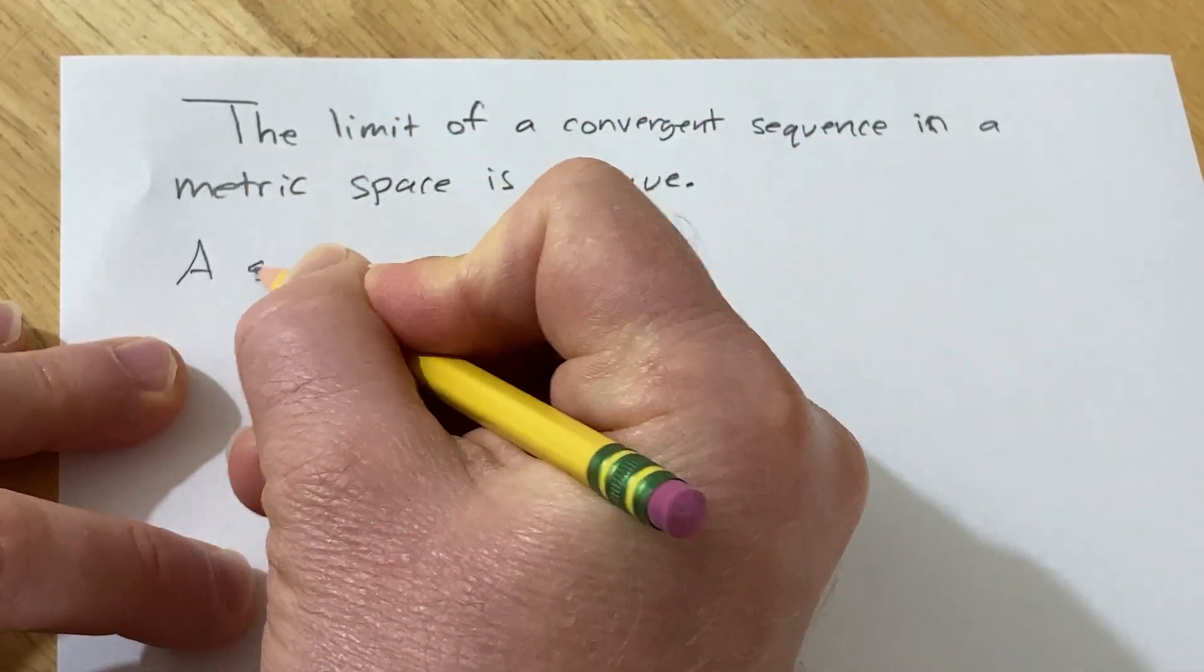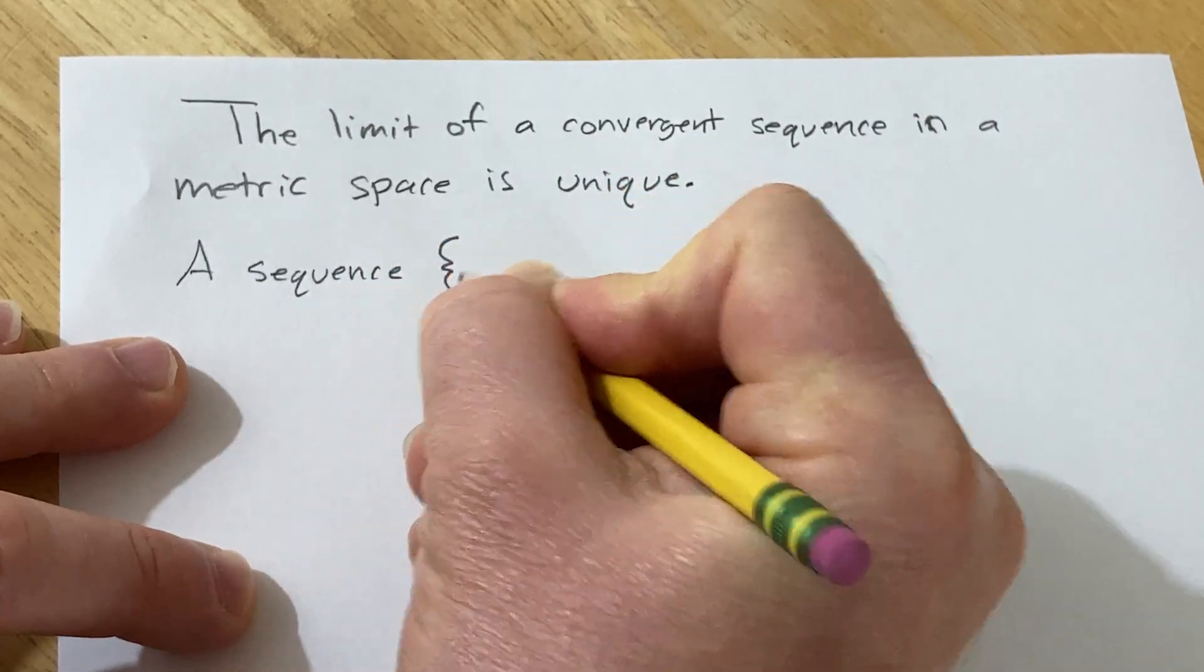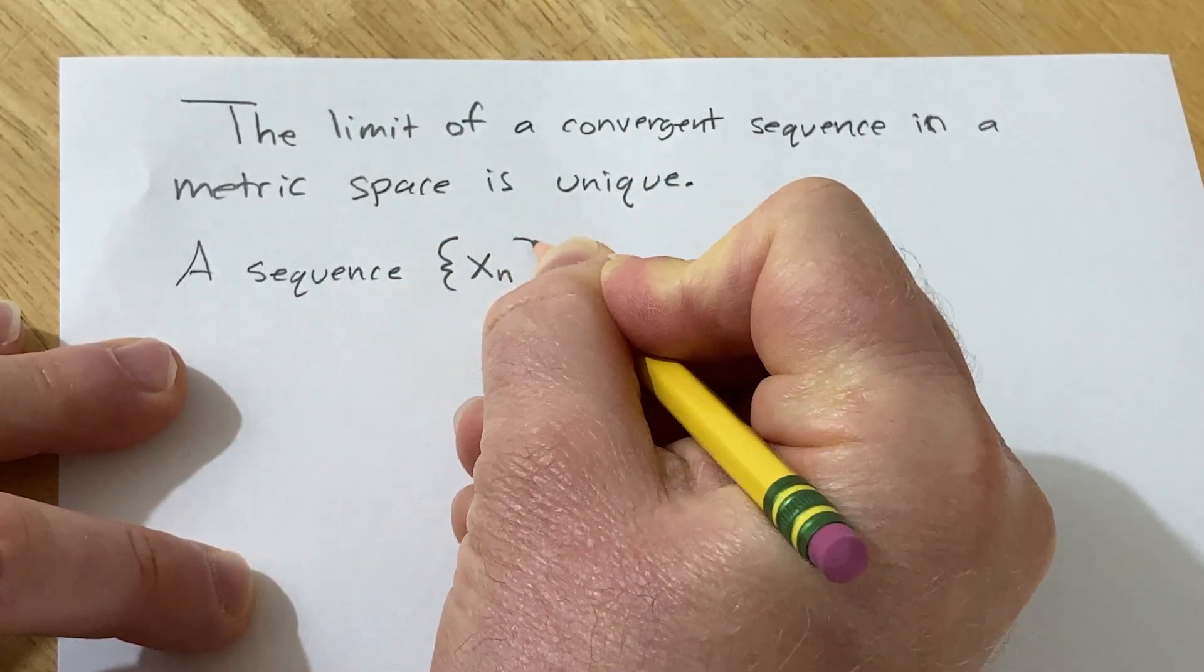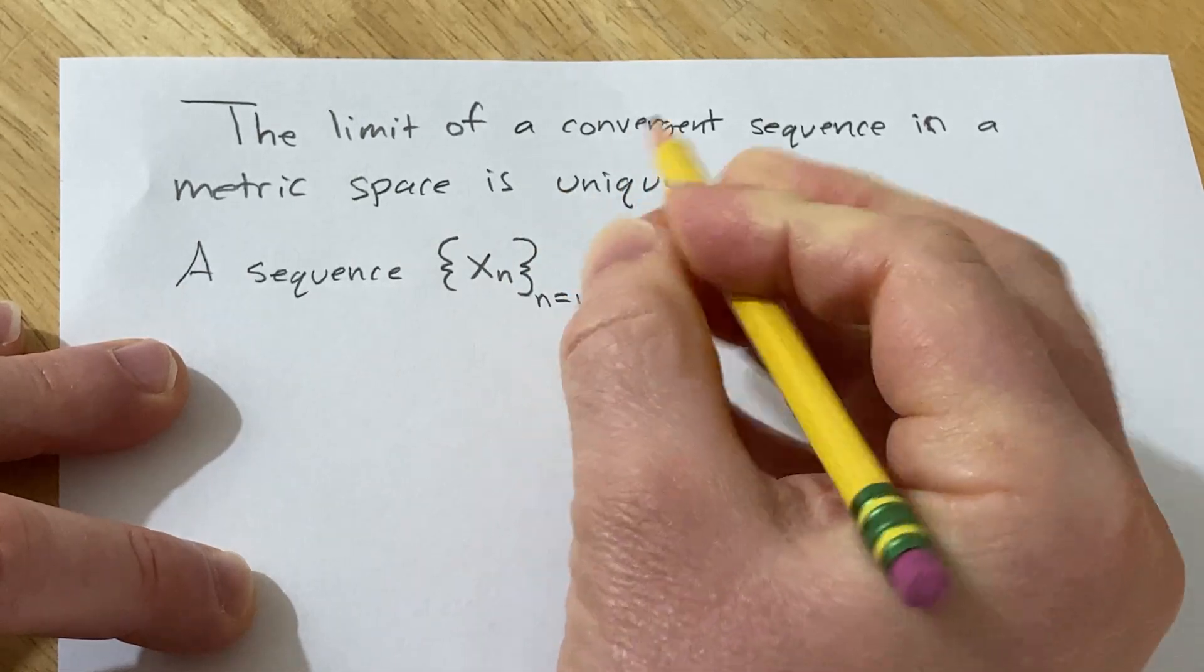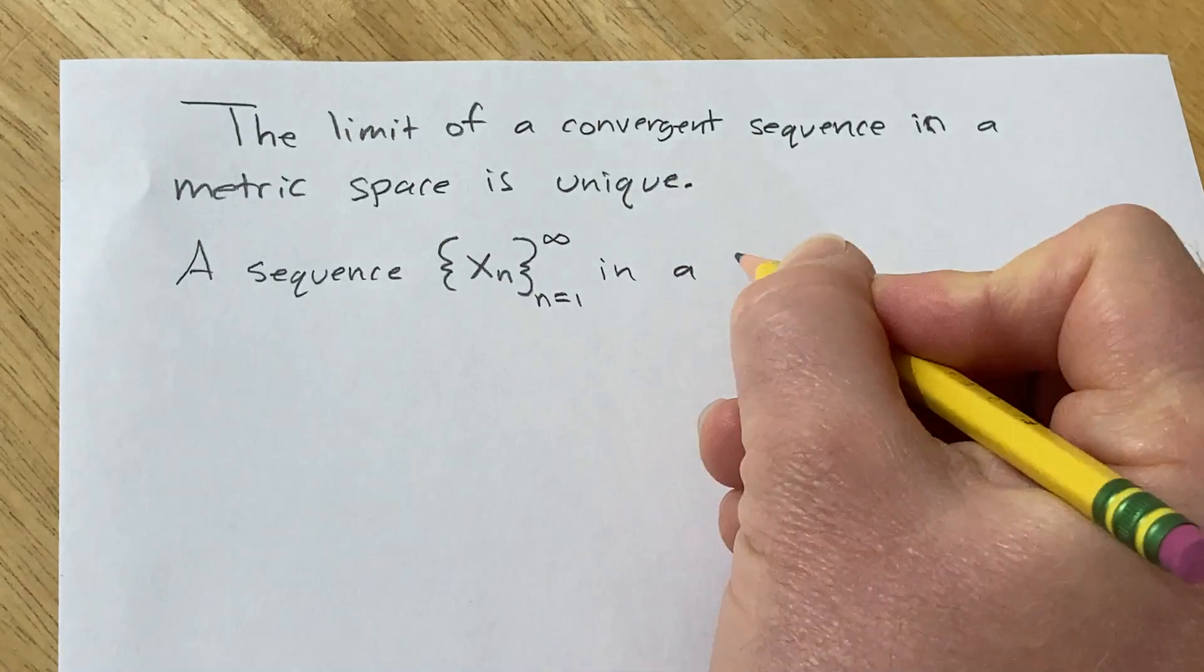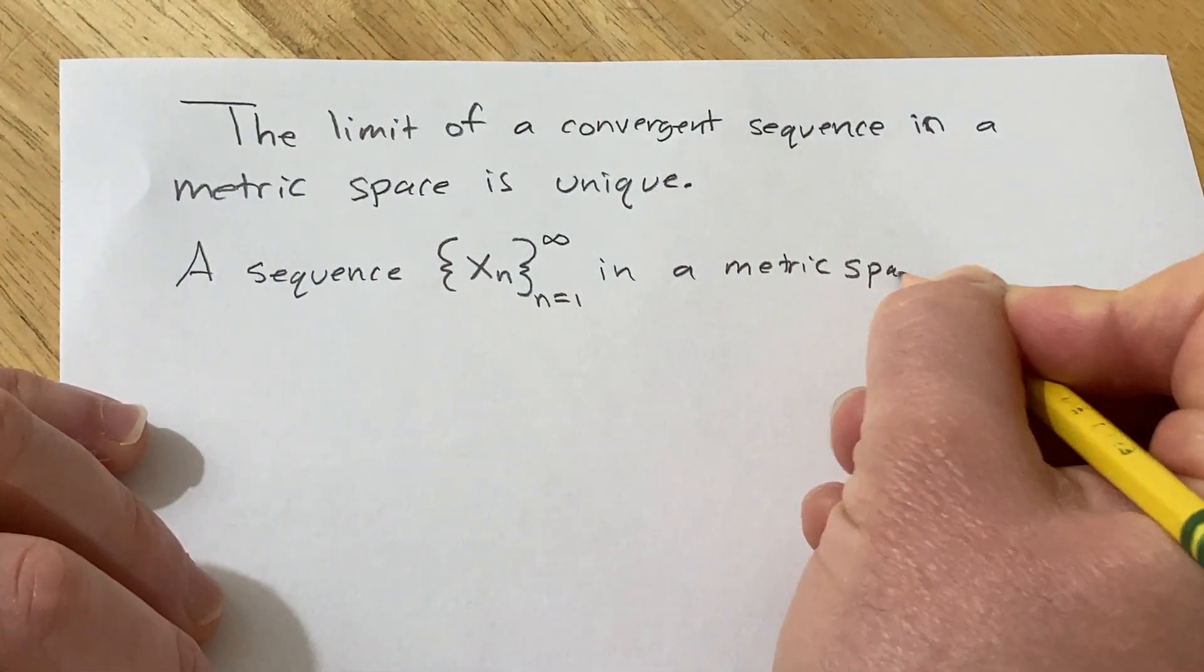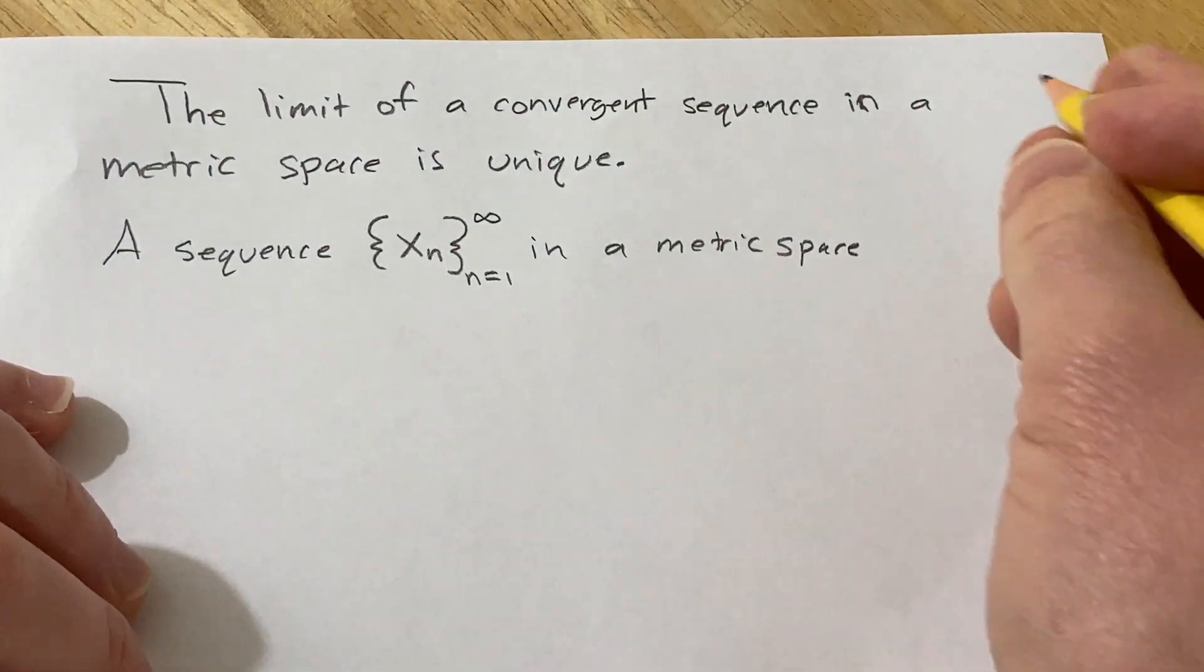So a sequence, I'm going to write it like this, x sub n, as n runs from 1 to infinity, in a metric space, it's two words, I don't know why I wrote them so close together.